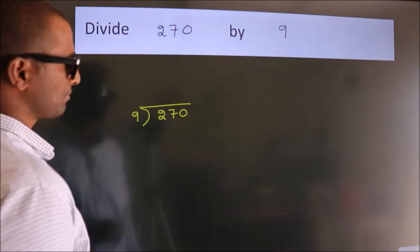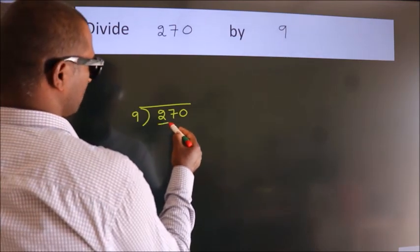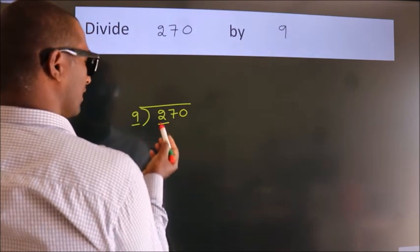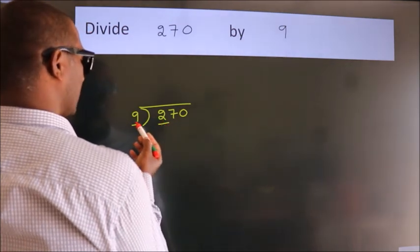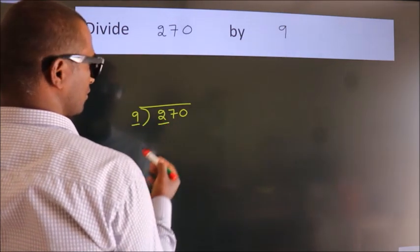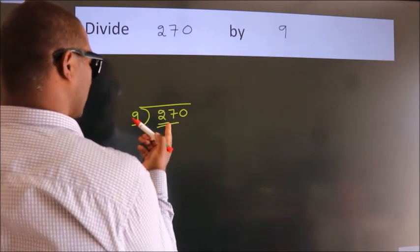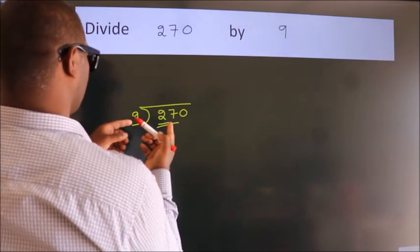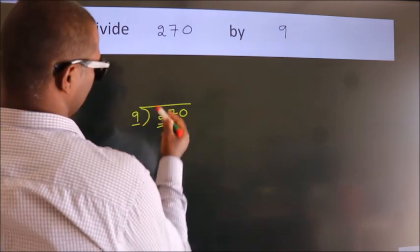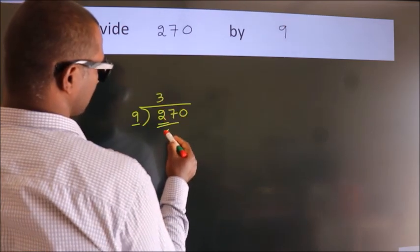Next. Here we have 2. Here 9. 2 is smaller than 9, so we should take 2 numbers. 27. When do we get 27? In 9 table. 9 threes, 27.